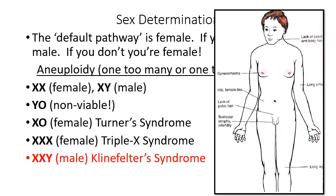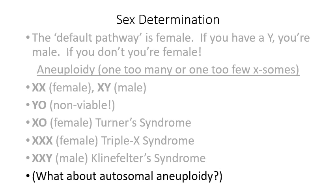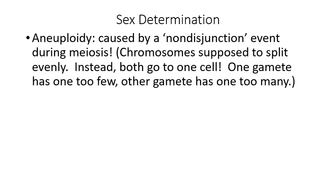Regarding autosomes: the only example of autosomal trisomy that is not lethal is trisomy 21, commonly known as Down syndrome. Having three copies of chromosome 21 is viable — you can be born and live a long life, though there are effects. Any other autosomal trisomy or monosomy is non-viable: the developing fetus dies in utero. A karyotype — a picture of someone's chromosomes cut and pasted in order — can reveal if there are three copies of chromosome 21, indicating Down syndrome.